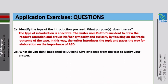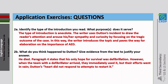Question 2b: What do you think happened to Dutton? Give evidence from the text. After reading the introduction, you can conclude that Dutton died. Paragraph four states that his only hope for survival was defibrillation. However, when the team with a defibrillator arrived and immediately used it, their efforts went in vain. The evidence is this statement: 'Dutton's heart did not respond to attempts to restart it.'